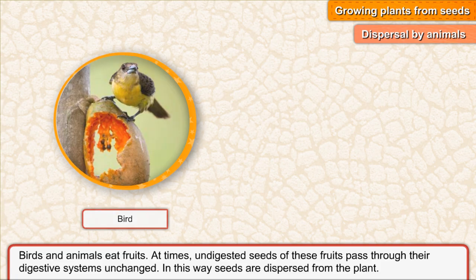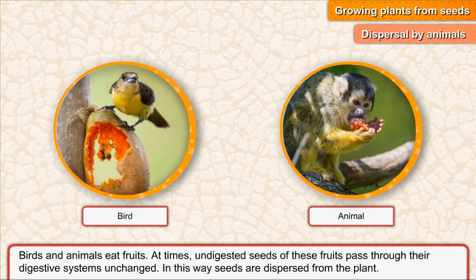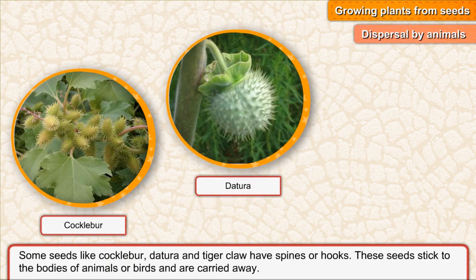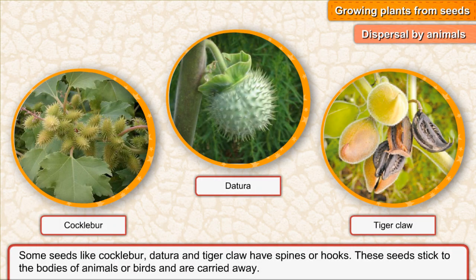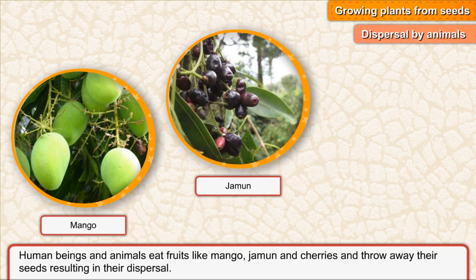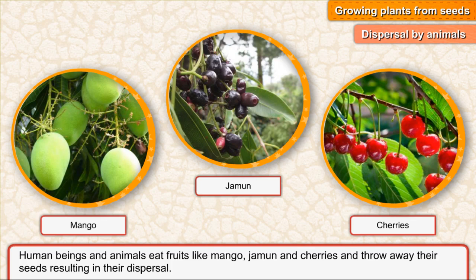Dispersal by animals. Birds and animals eat fruits. At times, undigested seeds of these fruits pass through their digestive systems unchanged, and in this way seeds are dispersed from the plant. Some seeds like cochlebar, datura and tiger claws have spines or hooks. These seeds stick to the bodies of animals or birds and are carried away. Human beings and animals eat fruits like mango, jamun and cherries and throw away their seeds, resulting in their dispersal.